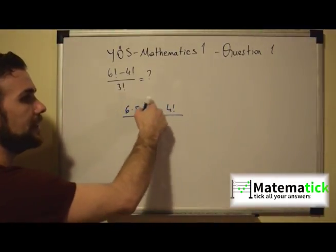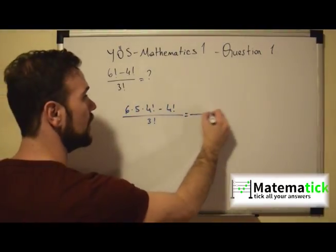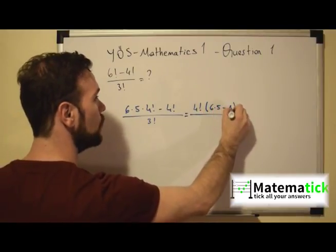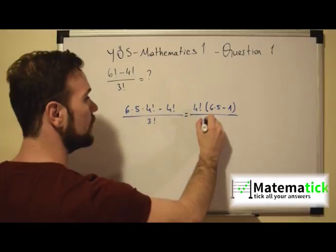So as a common factor I take 4 factorial. So we have 4 factorial times 6 times 5 minus 1 and that is over 3 factorial.